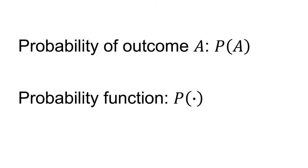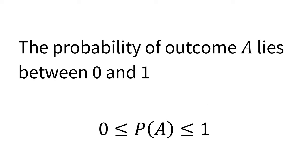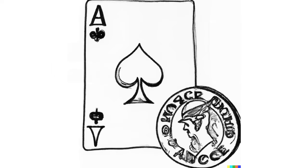The probability function has the following features. First, the probability of outcome A lies between 0 and 1. That is, 0 ≤ p(A) ≤ 1. For example, the probability of drawing the ace of spades from a full deck of 52 cards is 1 in 52, or approximately 0.02. The probability of flipping a head with a fair coin is 1 in 2, or 0.5.